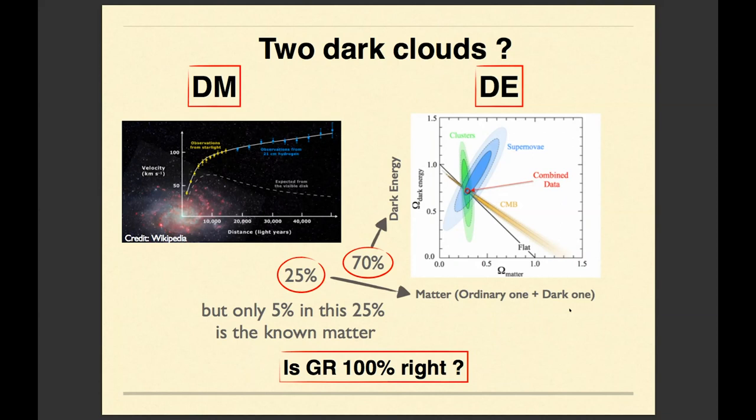And the only way to explain this phenomenon within general relativity is to admit that all the galaxies are put in some large, enormously large halo of invisible matter, which is called dark matter. These halos are 10 times larger than the size of the galaxy. There is a huge amount of dark matter in the universe. This is one dark cloud.